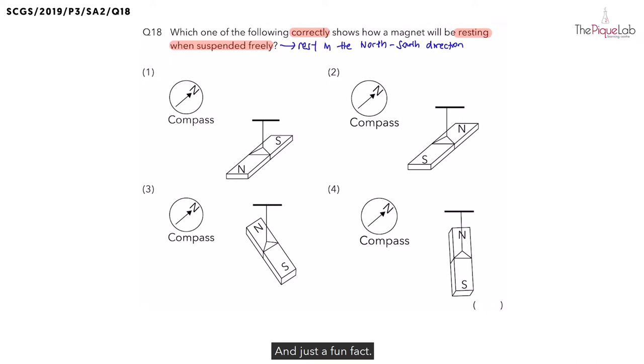And just a fun fact, this is actually how the needle of a compass works. The needle of a compass is also a magnet. So because the needle of a compass is a freely suspended magnet, it will always come to rest in the north-south direction.